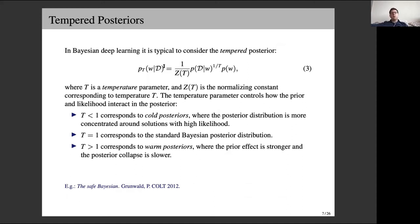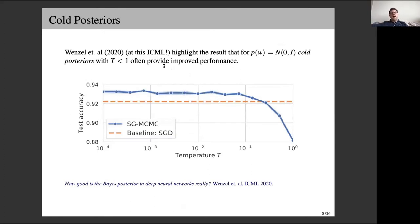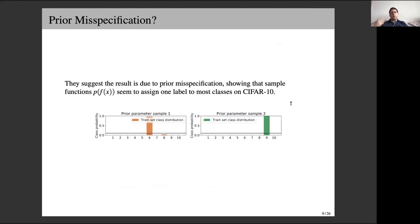It was observed that in certain settings, with a standard N(0, I) prior and T less than one, we can outperform classical training. But with T equals one, we're sometimes even doing worse than classical training. This was presented as a problematic finding. One hypothesis was that the prior is very misspecified — we don't necessarily have a great idea of what kind of prior to specify in weight space. When sampling from the N(0, I) prior, the corresponding functions tended to assign most CIFAR-10 data to a particular class.